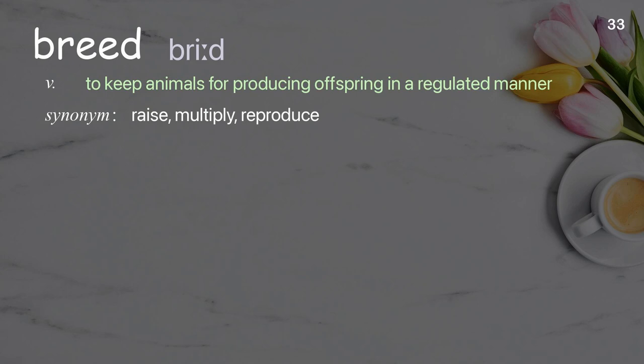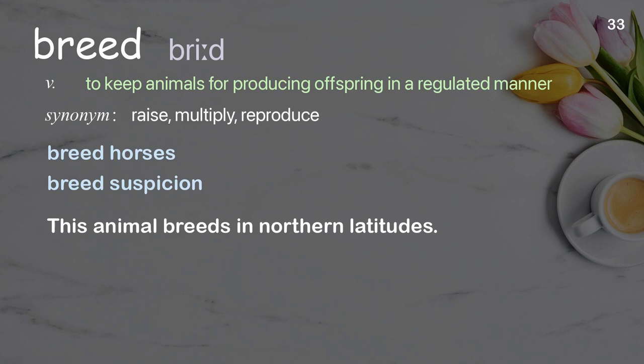Breed: To keep animals for producing offspring in a regulated manner. Examples: breed horses, breed suspicion. This animal breeds in northern latitudes.